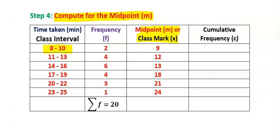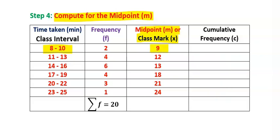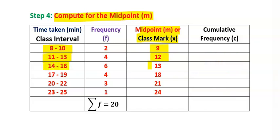Consider the first row: we got 8 plus 10 divided by 2, and our answer is 9. Hence, we got 9 here. Next, consider the second row: we got 11 plus 13 divided by 2, and our answer is 12. Hence, we got 12 here. Do the same to complete the other rows.